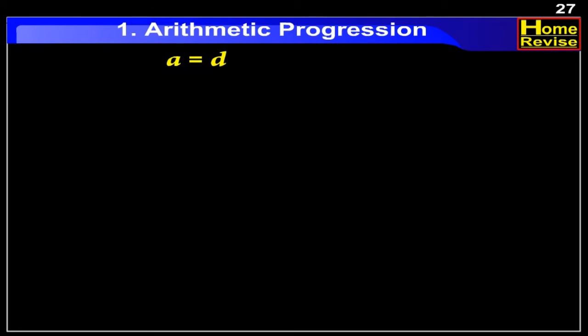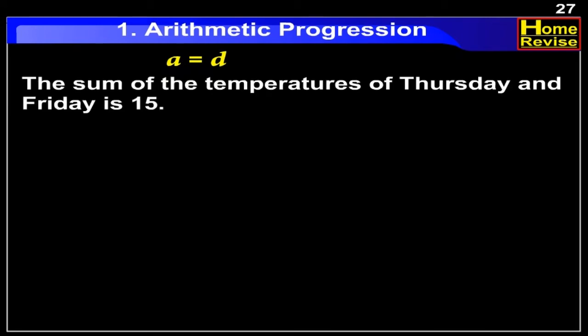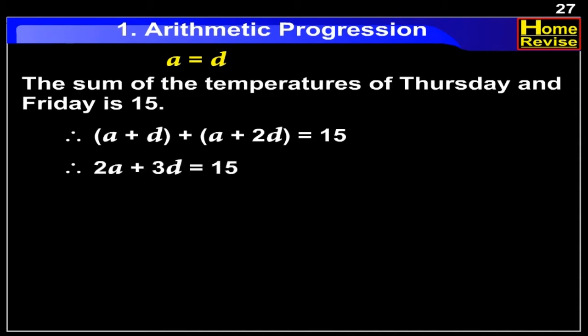Now, the sum of the temperatures of Thursday and Friday is 15. Therefore, (A plus D) plus (A plus 2D) is equal to 15. Therefore, 2A plus 3D is equal to 15. But we know that A is equal to D. Therefore, 2D plus 3D is equal to 15.